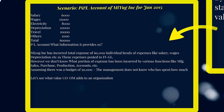However, this P&L doesn't show a detailed breakdown by department. Assuming the company had a budget of 50,000, we are now over budget at 60,000. So how do we know who spent those extra 10,000? Let's see what overhead management adds to an organization.